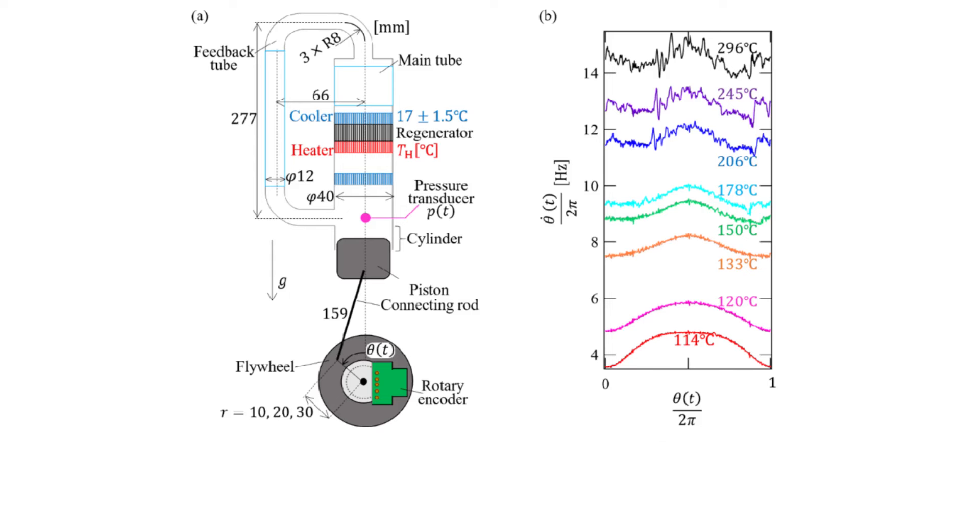Then the fluid enters a thermal buffer tube followed by a second cooler. The power flow is then split into the feedback branch and the power branch.